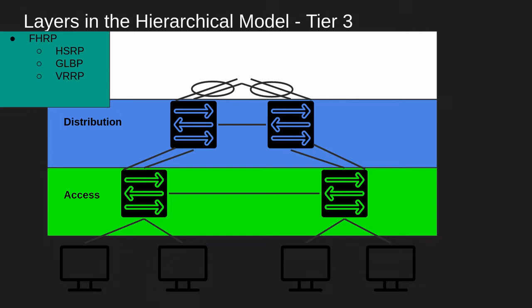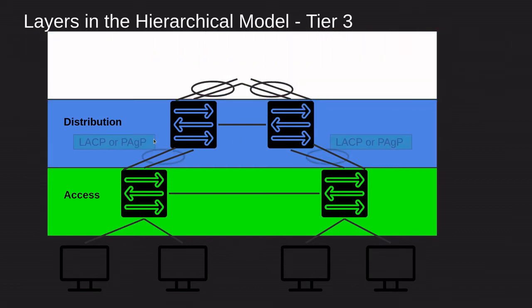If you have different switches like Juniper and others, then you want to run VRRP. VRRP is an open-source protocol and you can run that first-hop redundancy protocol between Juniper, Aruba, Cisco, and any other switch that supports it. Then we have GLBP, which is another Cisco proprietary protocol. The difference is that HSRP and VRRP only allow you to have one active router or switch, with the other on standby doing nothing. With GLBP, you can have more than one active switch or router at a time, which is really nice.